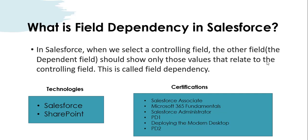Now let's see what is field dependency in Salesforce. When we select a controlling field, the dependent field should show only those values that are related to the controlling field — that is called field dependency. For example, there is a form with a picklist field for technologies.